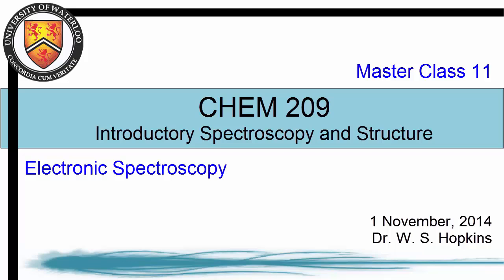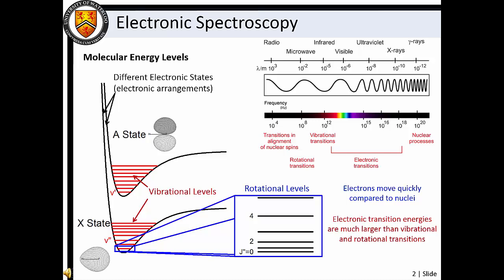Welcome to the Chemistry 209 Masterclass series. This series of lectures is intended to highlight the key concepts of introductory spectroscopy and structure. This lecture, Masterclass 11, discusses electronic spectroscopy.